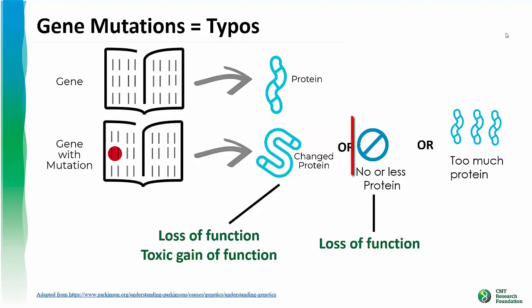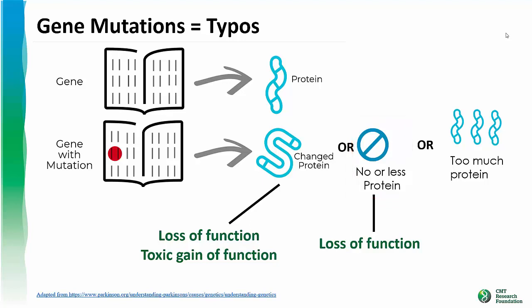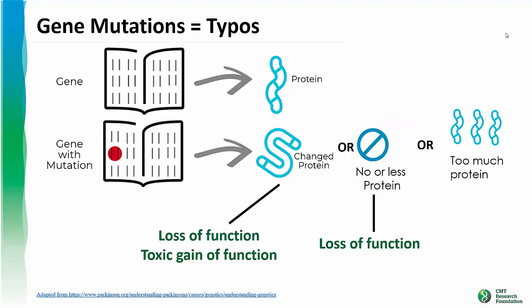Another possibility is that no protein or less normal protein is produced — this is also called loss of function. Finally, too much normal protein may be produced. All of these possibilities occur in different forms of CMT.